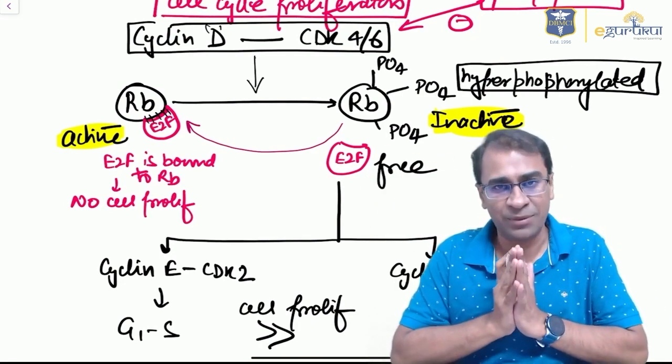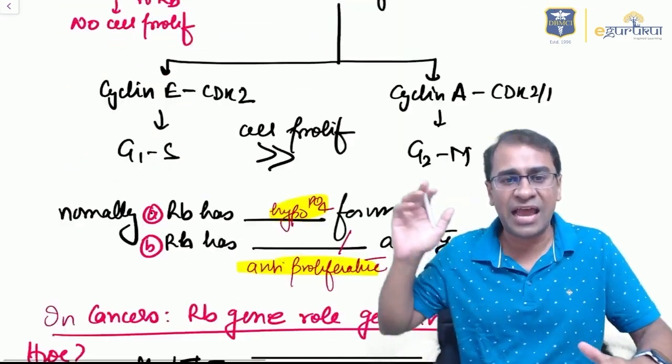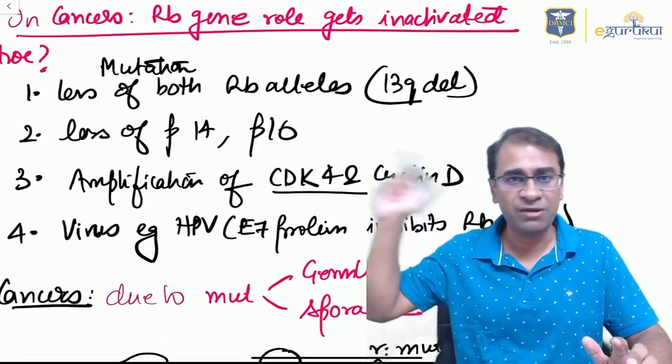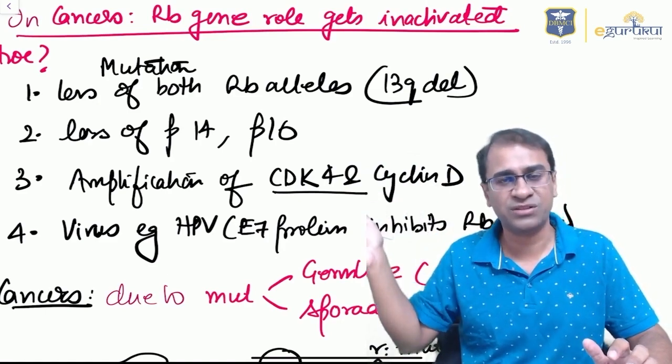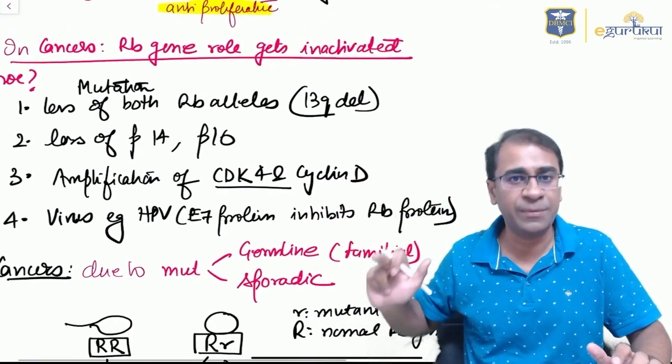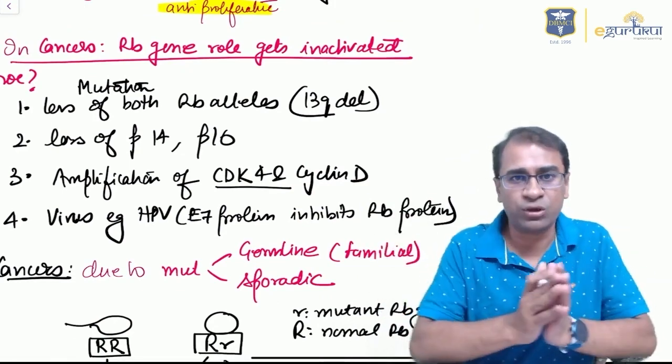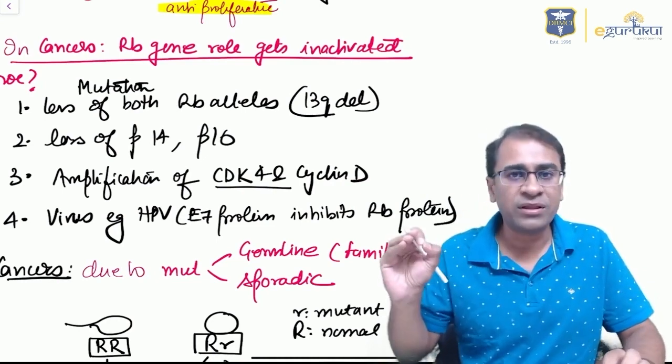Inactivation of RB protein can occur if there's loss of RB, loss of p16—remember p16 is INK4—amplification of CDK or cyclin D, or a virus like HPV. HPV inhibits RB by E7 protein, whereas E6 protein inhibits p53.